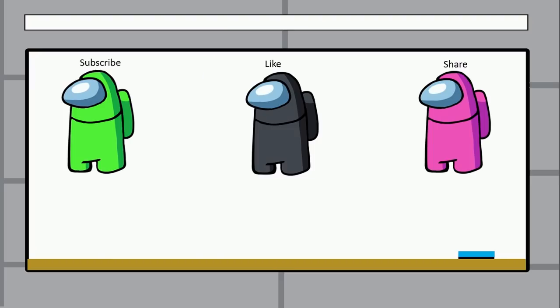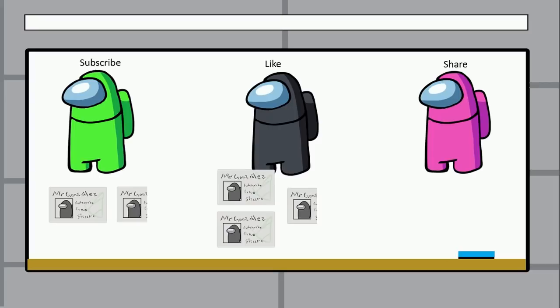Okay, in this case we have subscribe, like, and share. So we have each part and in this case we have some ideas. Tell me what is the impostor: subscribe, like, or share?